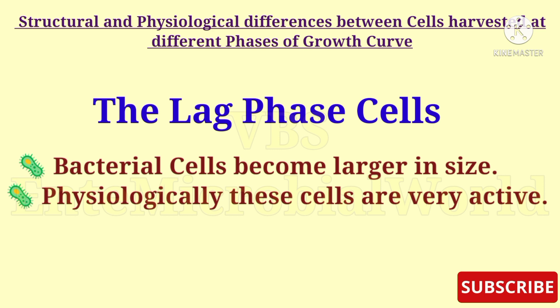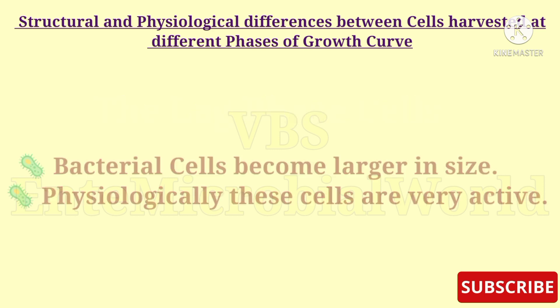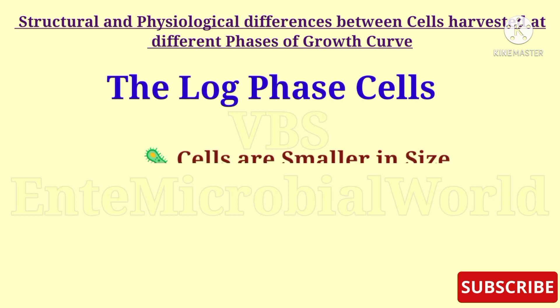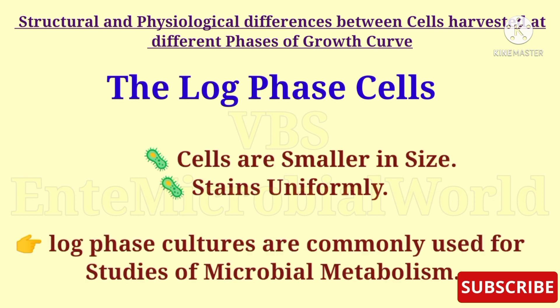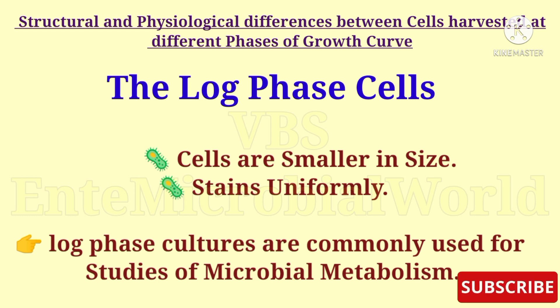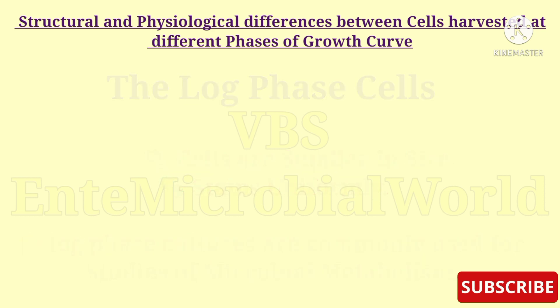In the log phase, the cells are smaller and stain uniformly. Cells in the logarithmic phase of growth are the most uniform, and under defined conditions, log phase cultures are commonly used for studies of microbial metabolism.